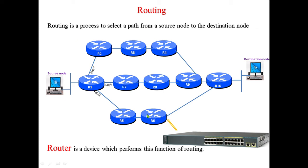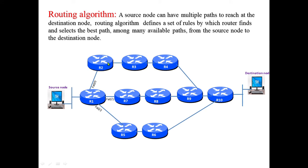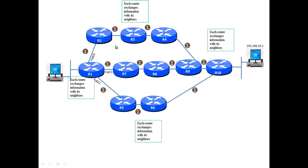This is the real picture of a router, and in academics we use a symbol to represent it. Routers follow some set of rules called a routing algorithm to find out the best path. Routing is a process to find out the path, routers are the devices that perform that job, and routing algorithms are the set of rules followed by routers to find the best path among many available paths from source to destination.